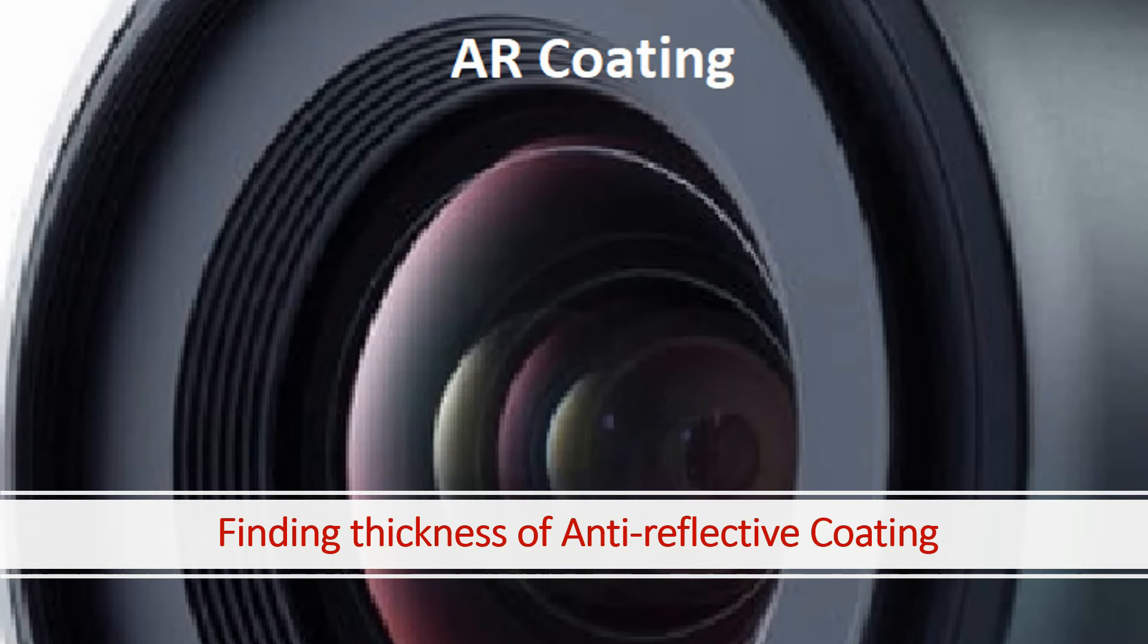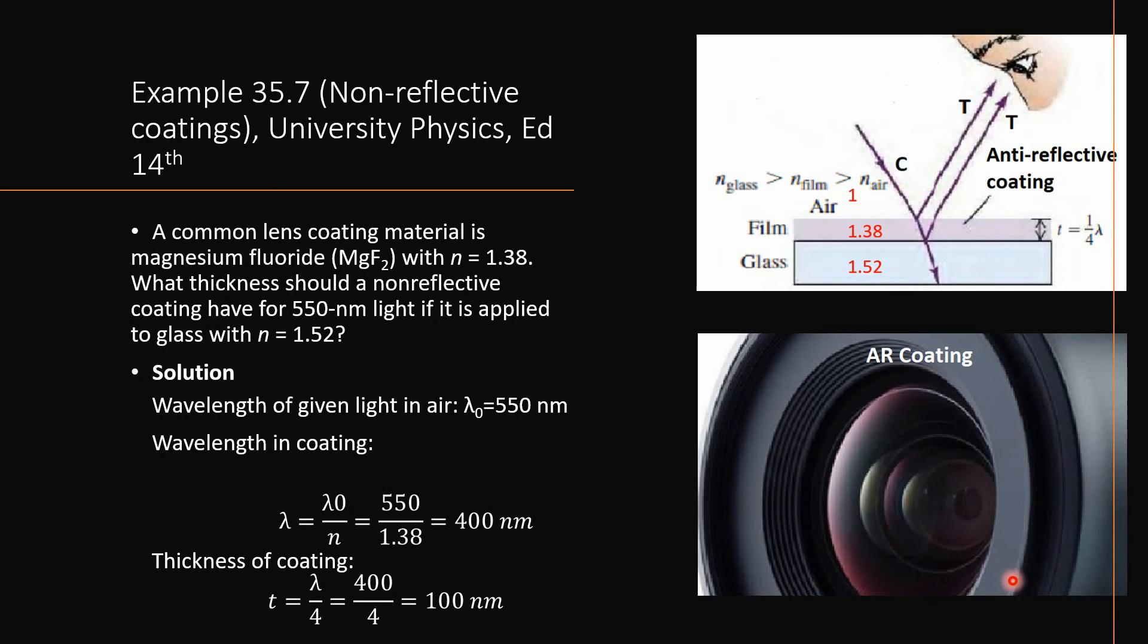We have given some data and we have to find its thickness. In this example, a glass is coated with magnesium fluoride. The refractive index of the glass or lens is given as 1.52 and the refractive index of the film that is made of magnesium fluoride is given as 1.38.